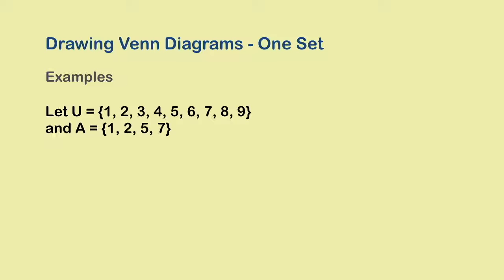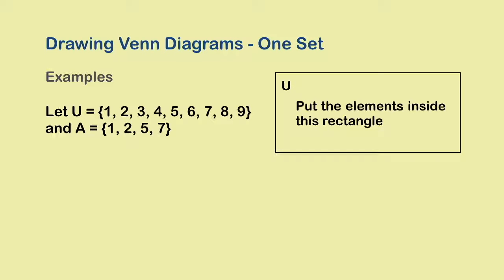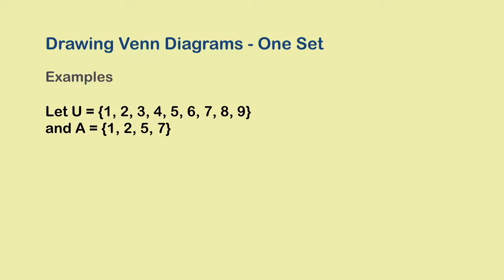Well, we represent a universal set using a rectangular region. So we draw a rectangle and put the elements of the universal set inside the boundary of the rectangle. Other sets are generally represented using circles. In our case, there is a universal set with only one subset, set A. So our Venn diagram needs a rectangle and a circle, but we also need to show the relationship between the two sets, that A is a subset of U.